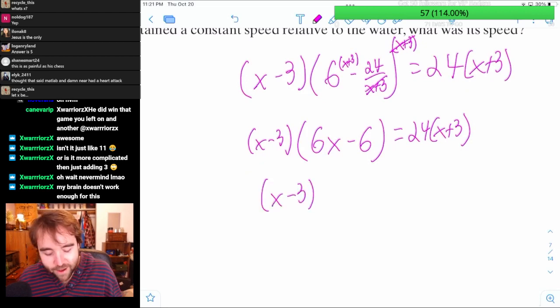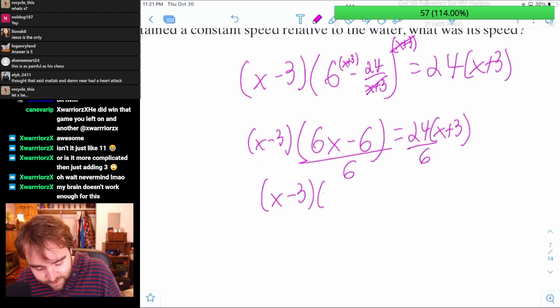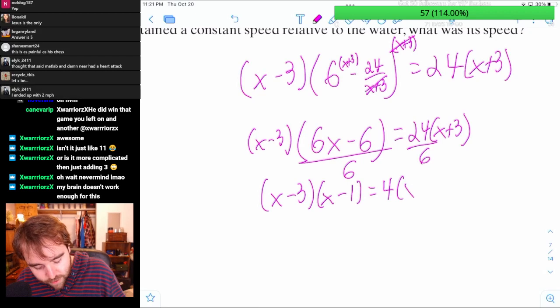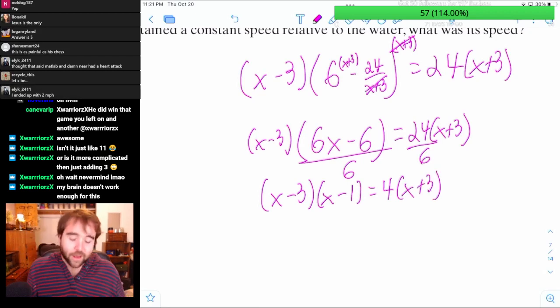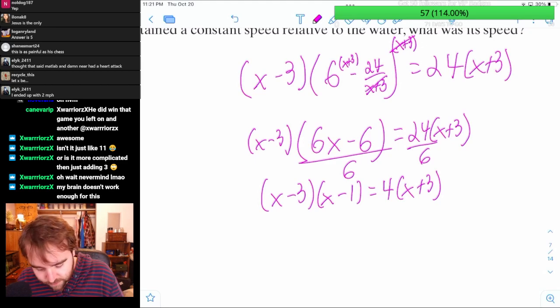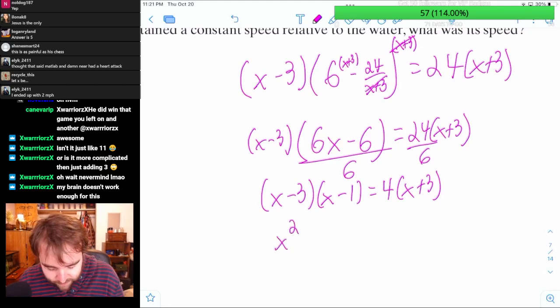We'll do X minus 3, divide everything by 6. So now this is X minus 1 equals 4X plus 3. And I like this better because the numbers are smaller. So that should be decent. Hopefully I don't get the same equation I got last time.